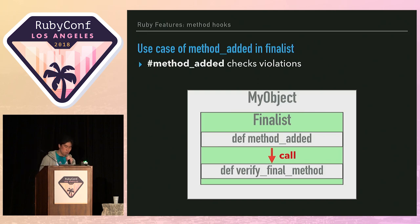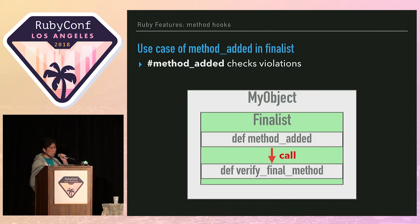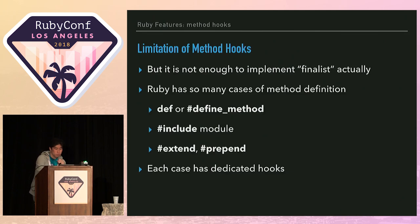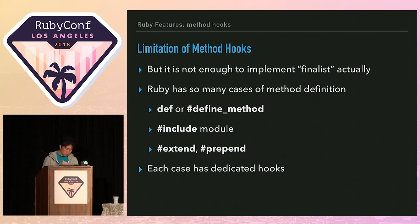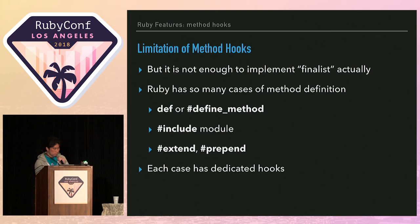Here is a use case of method_added in finalist. method_added contains the main method verification logic. Method hooks are useful for implementing method modifiers, but I cannot implement the final modifier using only method hooks.